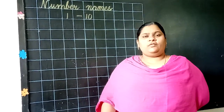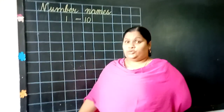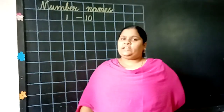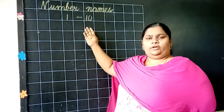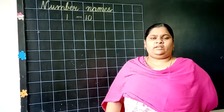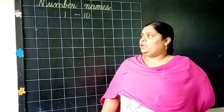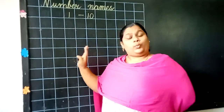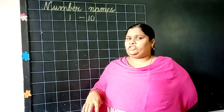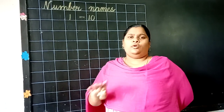Hi children, how are you? Children, in Junior KG, you have learnt number names 1 to 10. How many of you remember it? Ok, very good. And now, once again, I am revising it. Ok children, please practice well at your home.